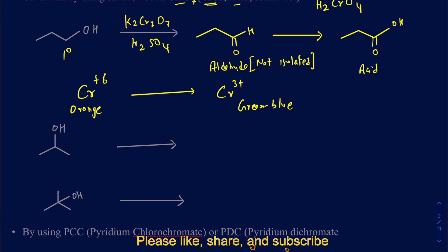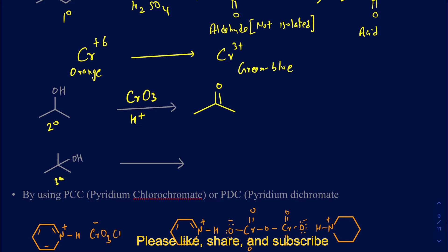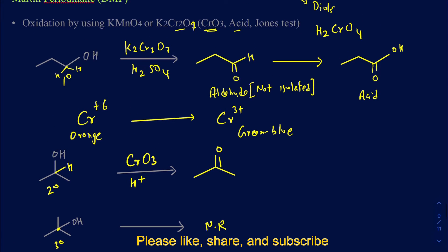Secondary alcohols treated with any of those oxidizing agents — KMnO4 or K2Cr2O7 — get oxidized to a ketone. If you have a tertiary alcohol, remember there's no hydrogen on that carbon. Primary alcohols have two hydrogens, secondary have one, but tertiary have none. Since there's no hydrogen available, no oxidation reaction occurs — no reaction in this particular case. So Jones reagent can distinguish between primary, secondary, and tertiary alcohols.